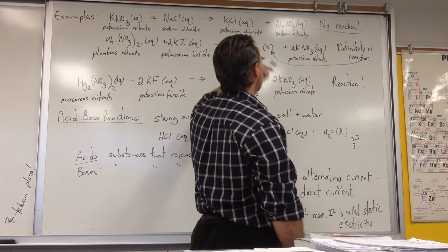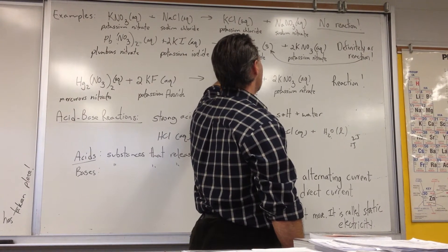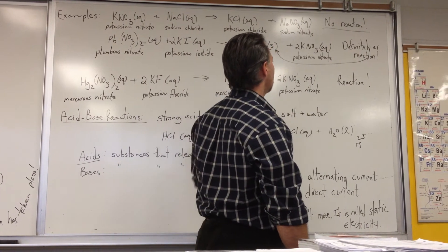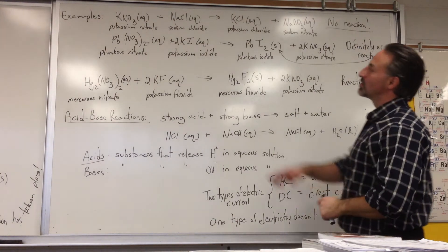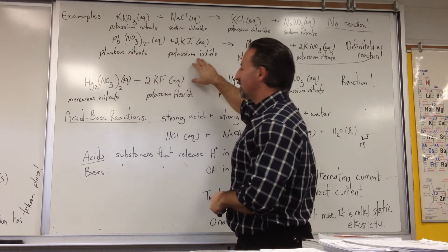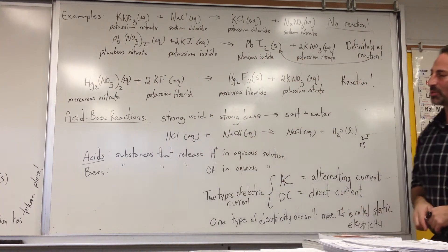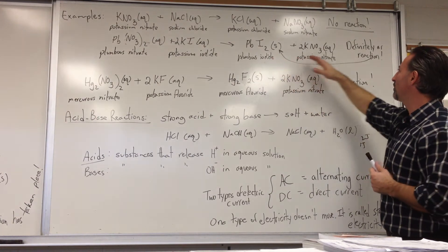It's plumbus iodide. It turns out that heavy metal salts of halogens are insoluble. So plumbus iodide and insoluble salt. That's definitely a reaction. When you mix those two clear solutions, this is a clear solution, that's a clear solution. When you mix them together, you get a swirl of yellow precipitate forming. And that yellow precipitate is the plumbus iodide. So that's how we can tell if a reaction has happened.